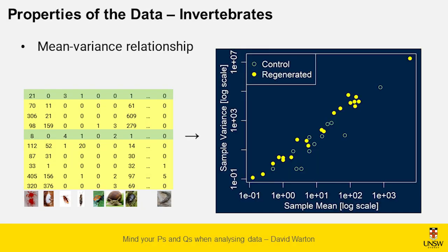When the mean is high the variance is high, and when the mean is low the variance is low — we get what's called a mean-variance relationship. It's a very strong one. Here are your rare species and rare orders like bugs, and up here you've got your mites and beetles. It's about a hundred-million-fold range of variances between the abundant ones and the rare ones. If you use a mean squared error loss function that's not accounting for variability, your model is just going to focus on mites and beetles and not care much about bugs because there's not much variation there.